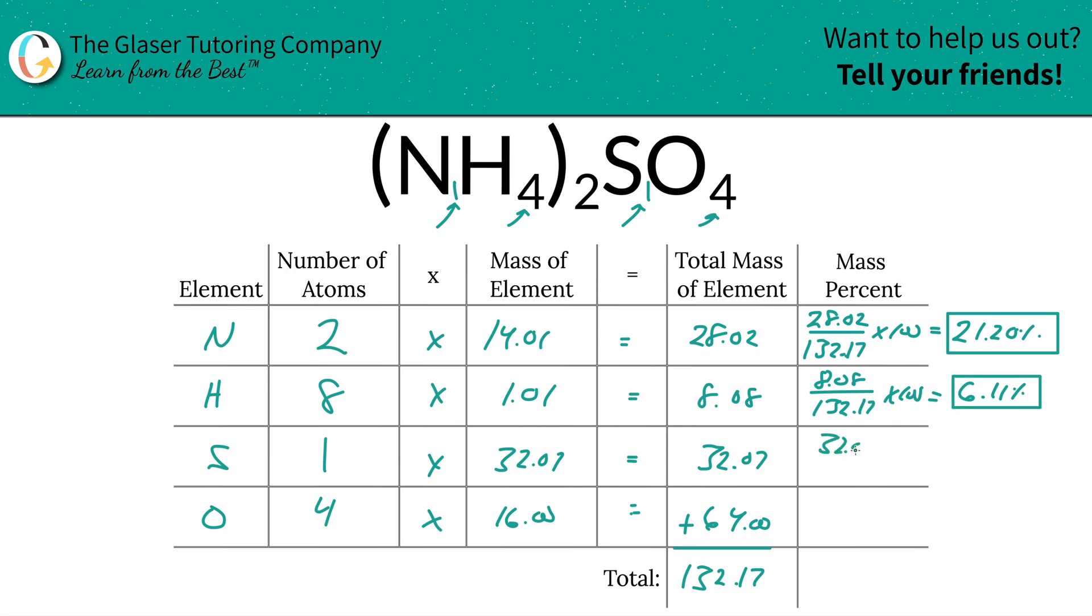Next, sulfur. See how routine this becomes now? This is so routine, and this is good because you want structure when learning something—it gives you a nice flow. That works out to 24.26 percent.